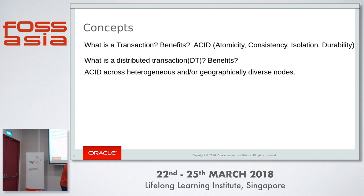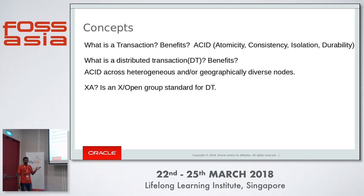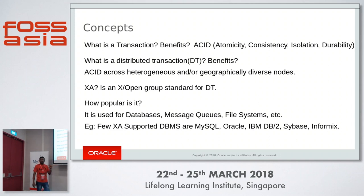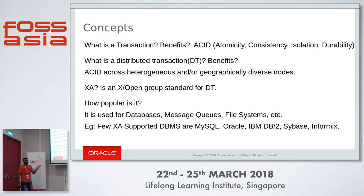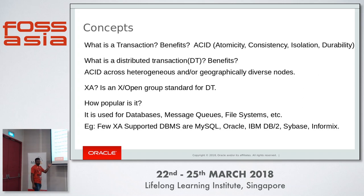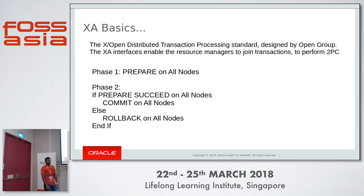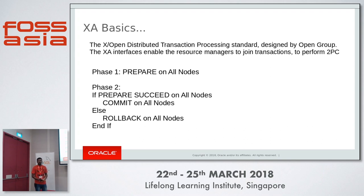How can we do it? There are different ways. One of the ways is the XA transaction, the XA protocol from the Open Group. It has been adopted by different functional and logical entities like databases, file systems, and message queues. In the database world, it is supported by most famous databases including MySQL, Oracle, DB2, and others. The XA standard uses the two-phase commit protocol to ensure ACID properties.